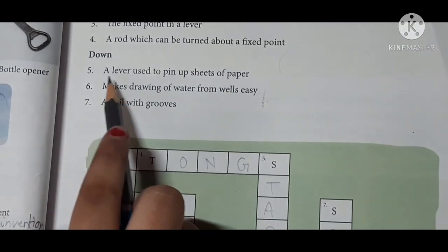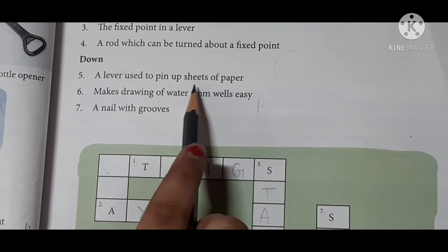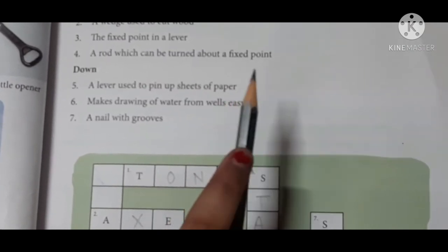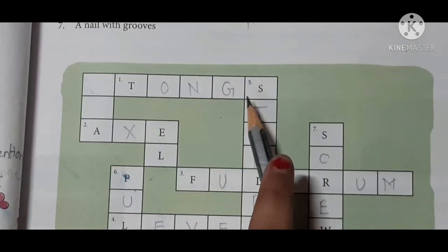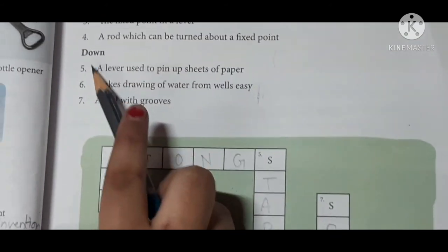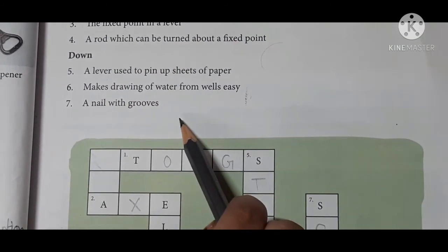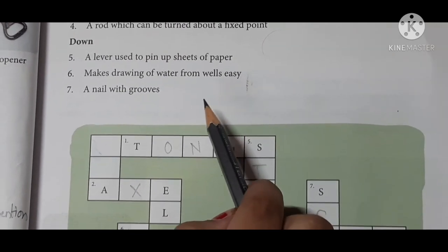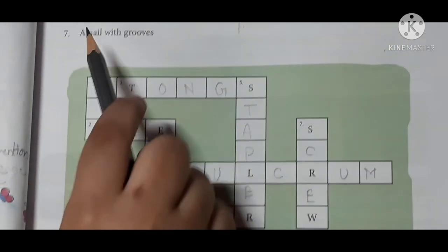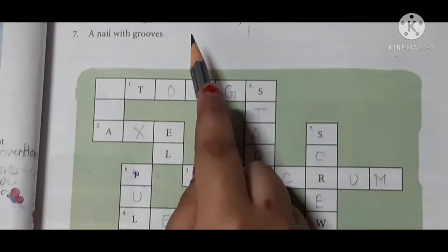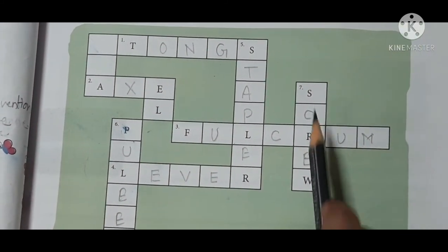Down. Fifth, a lever used to pin up sheets of paper. Stapler. Sixth, makes drawing of water from wells easy. Pulley. Seven, a nail with grooves. Screw.